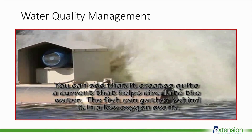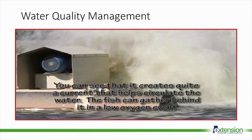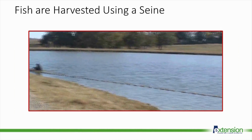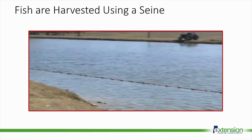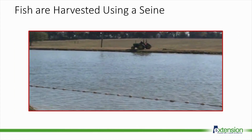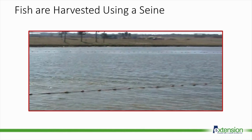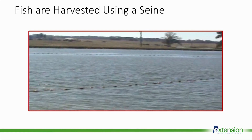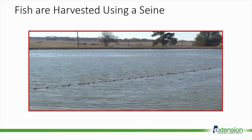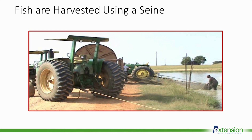Fish will often line up behind one of these aerators during a low oxygen event. After about 18 months, the fish reach a market size of about two pounds and are ready for harvest. The fish are harvested with a long net called a seine. As the tractor pulls the seine through the water, the fish are funneled into a smaller detachable box-shaped net called a live car.